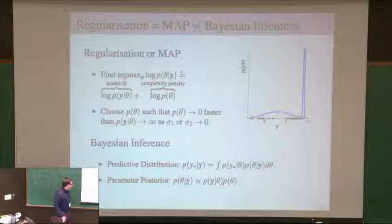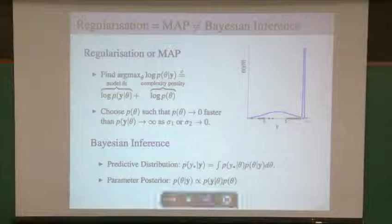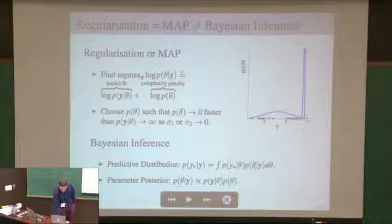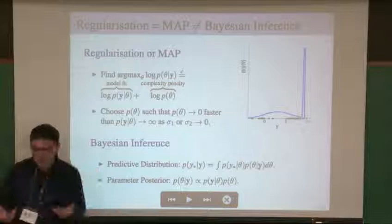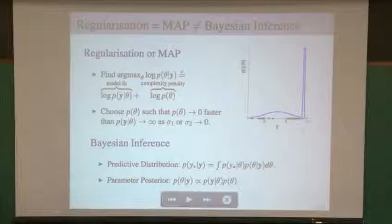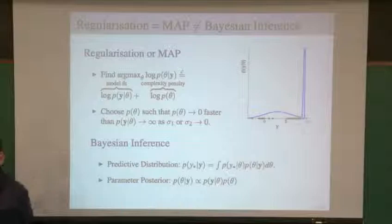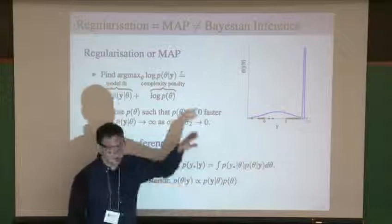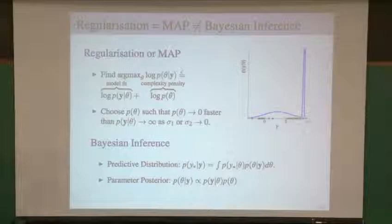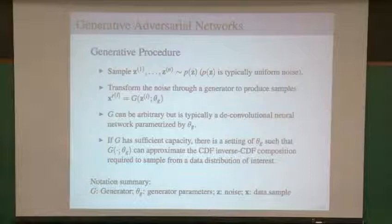We can remedy this problem by having a regularizer which will go to zero faster than the likelihood goes to infinity for pathological settings, such as having the variance parameters going to zero. Or we could follow a fully Bayesian approach where we do Bayesian marginalization — our density estimate for y* given these parameters, weighted by the posterior probability of these parameters given the data. So we're doing a Bayesian model average over an uncountably infinite set of solutions, and we can use extremely flexible density estimation models, even infinite mixtures of Gaussians like Dirichlet process mixture models.